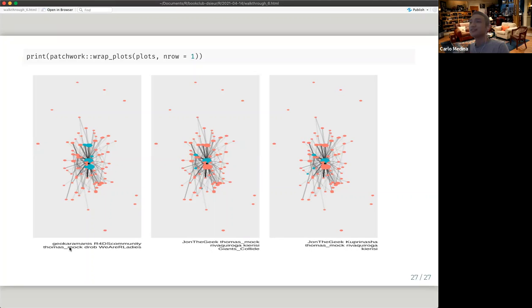In this case, we have Gio Karamani's R4DS community, Tamasmok, DROB, and we R4Ladies having mentioned or received mention from each other. And then you have another clicks with John the Geek, Tamasmok, Riva, Quiroga, Quirisi, Giants Collide. And then you have John the Geek again with Kuprinasha, Tamasmok, Riva, Quiroga, and Quirisi. Yeah, from here, we can see Tamasmok is everywhere in this data set because he mentions a lot of people every time he publishes the data. So that's what I have for this walkthrough. I may have gone through this really quickly. So I'm happy to discuss sections and it needs clarification or you need help with something.